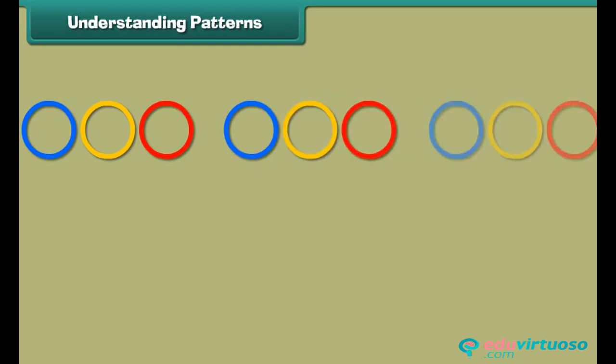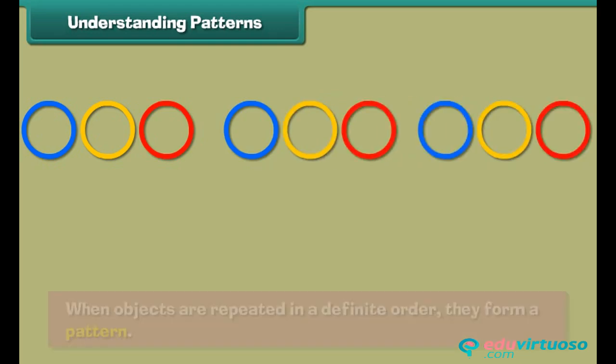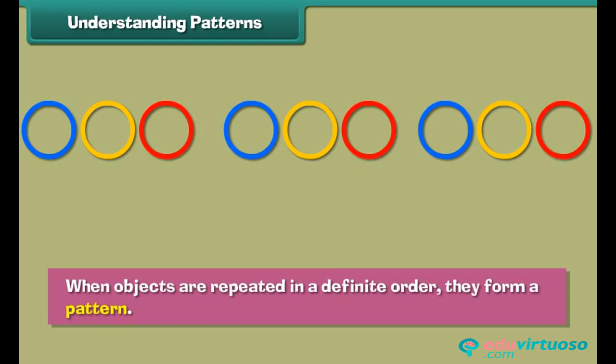Understanding patterns. Look at this arrangement of rings. A blue ring is followed by a yellow ring followed by a red ring. This arrangement is repeated three times. When objects are repeated in a definite order, they form a pattern.